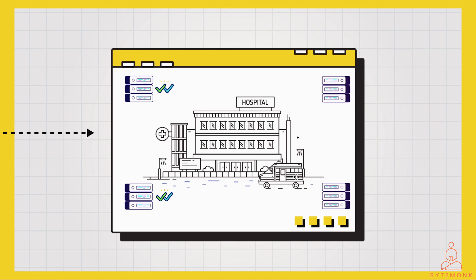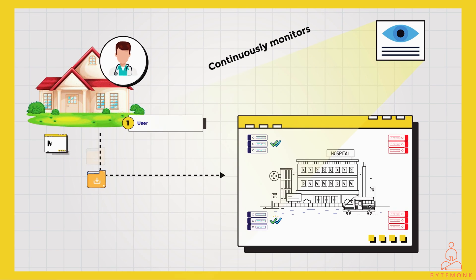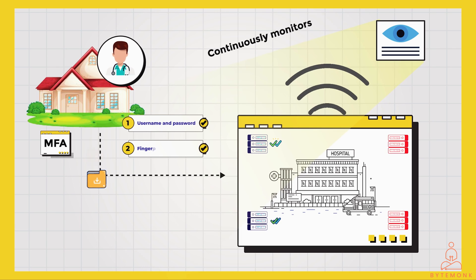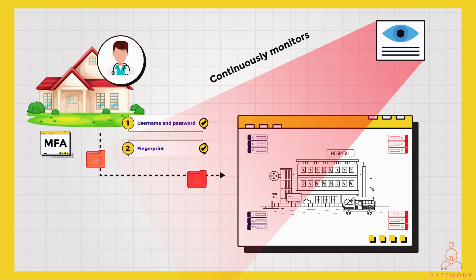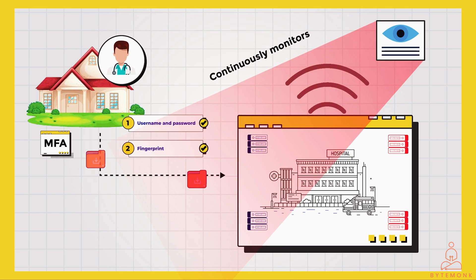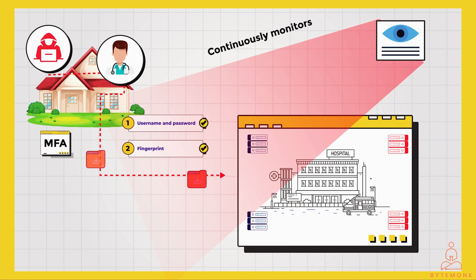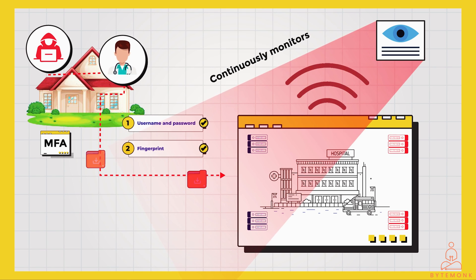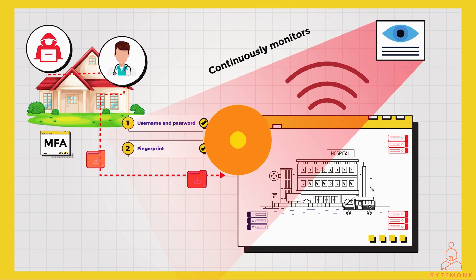In ZTS, the hospital's network is not a single open space — it is divided into smaller isolated segments using software-defined perimeters (SDPs). Access is granted only to the specific patient records the doctor needs for their current task, preventing access to other network segments. The ZTS-based network also continuously monitors the session and user behavior for suspicious activity, and access can be revoked immediately if anything suspicious is detected. This layered approach makes it much harder for an attacker who steals the doctor's credentials, as they would be limited to specific records and quickly flagged.